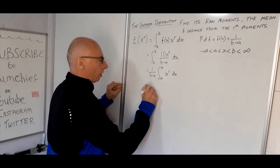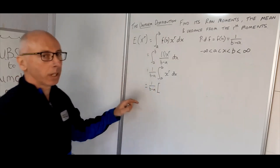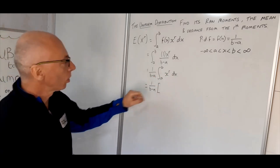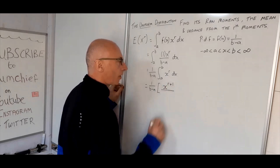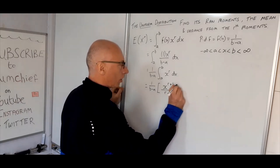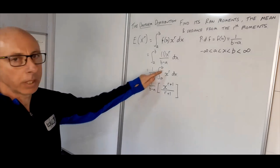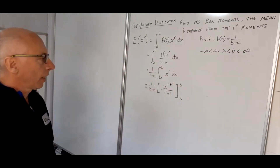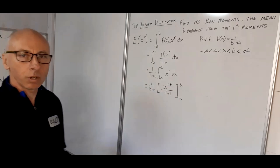Applying the power rule: 1/(b − a) multiplied by x^(r+1) divided by (r+1), evaluated from a to b. Then wherever we see x we plug in a or b and subtract the difference.